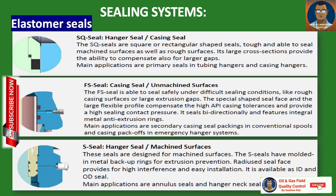The FS seal (casing seal for machined surfaces) is available to seal safely under difficult sealing conditions like rough casing surfaces or large extrusion gaps. The special seal shape and large flexible lip compensate for high API casing tolerances and provide high sealing contact pressure. Main applications are secondary casing seal packings in conventional spools and casing pack-offs in emergency hanger systems. The third elastomer seal is the S seal (hanger seal for machined surfaces) — designed for machined surfaces with molded-in metal backup rings for extrusion prevention. It provides high interference and easy installation, available as ID and OD seal. Main applications are annulus seals and hanger neck seals.